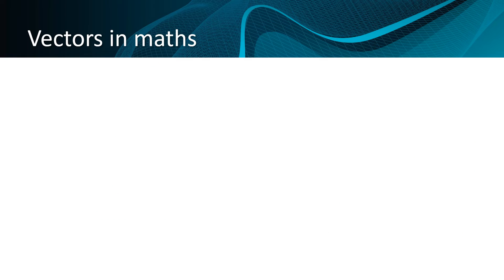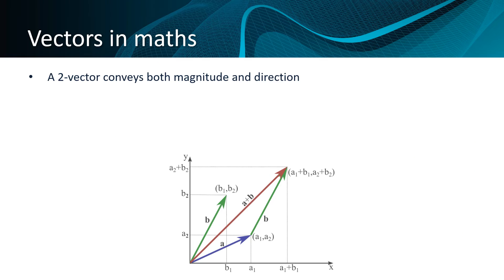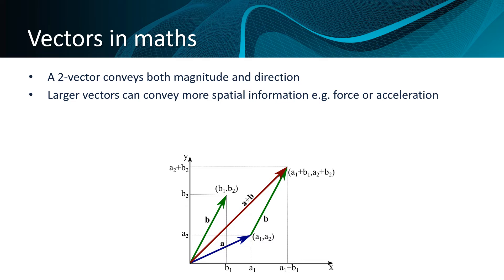A 2-vector conveys both magnitude with the length of the line and direction with the way it goes. Larger vectors with more dimensions can convey more spatial information, for example force or acceleration.